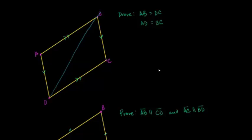If you view it that way, you can pick out that angle ABD is going to be congruent to angle BDC, because they are alternate interior angles. You have a transversal and parallel lines. So we know that angle ABD is congruent to angle BDC.